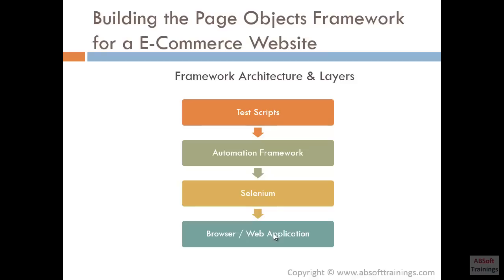With this architecture, make sure that test scripts don't directly use Selenium or the web application — all calls to Selenium or the web application from test scripts should go through the automation framework. For example, in future if we are going to use a different automation tool, we just need to change the interface between the automation framework and Selenium. Our test scripts and calls to the automation framework don't need to change. This is the architecture we are going to follow — test scripts call the automation framework, the automation framework uses Selenium, and Selenium drives the browser.